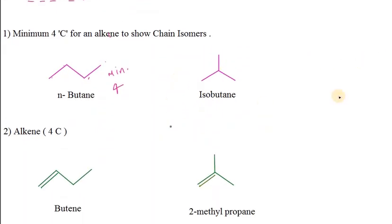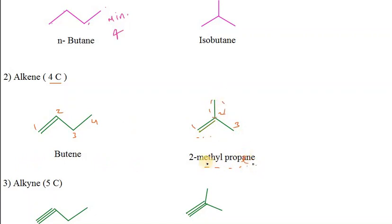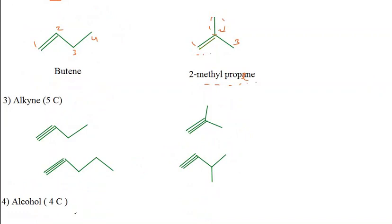Now we talk about alkene. In case of alkene, minimum 4 carbons are needed: 1, 2, 3, 4 carbons. From there we can produce — this is butane and this is 2-methylpropane. With 1, 2, 3 carbons and a 2-methyl group, it is 2-methylpropene. So minimum 4 carbons are needed in case of alkene.